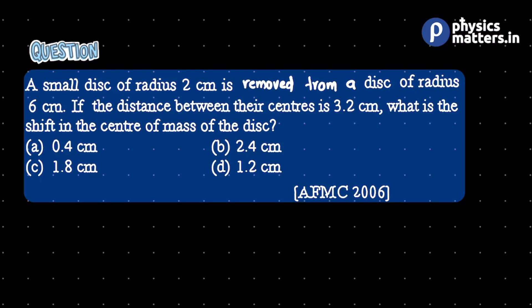Hello everyone. So this question, AFMC 2006. A small disk of radius 2 cm is removed from a disk of radius 6 cm. If the distance between their centers is 3.2 cm, what is the shift of center of mass?